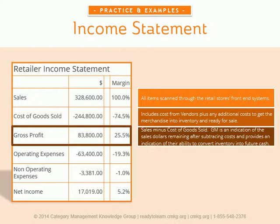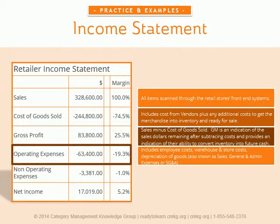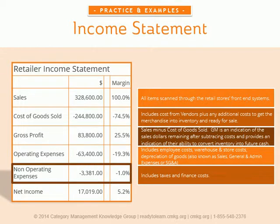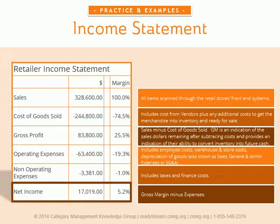Next is the cost of goods sold, which is the expense most directly involved in creating revenue. It represents the costs of producing or purchasing the goods or services sold by the company. For example, if a retailer pays a vendor $4 for a box of product when it sells to customers for $5, the retailer's cost of goods sold for that box would be $4. In our example, the company acquired those goods for a cost of $244,900. As a result, it earned $83,800 in gross profit with a 25.5% gross margin.